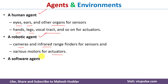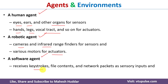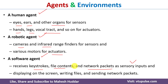If you consider a software agent, keystrokes — what we press on the keyboard — mouse inputs, file contents, and network packets will act as sensory inputs. With the help of these inputs, the software agent will perform actions like displaying content onto the screen, writing contents into a file, sending packets on a network, and so on.